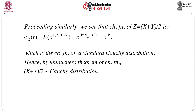Similarly, for Z = (X+Y)/2: φ_Z(t) = E[e^{it(X+Y)/2}] = e^{-|t/2|}·e^{-|t/2|} = e^{-|t|}, which is exactly the characteristic function of a standard Cauchy distribution. By the uniqueness theorem, (X+Y)/2 follows a standard Cauchy distribution.